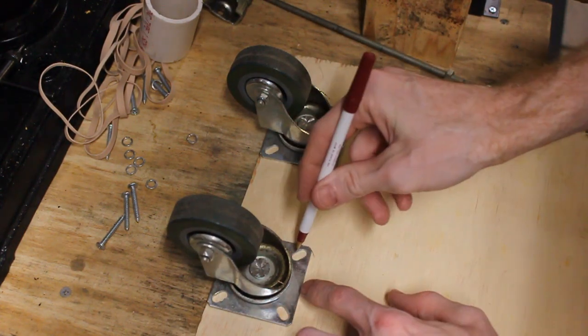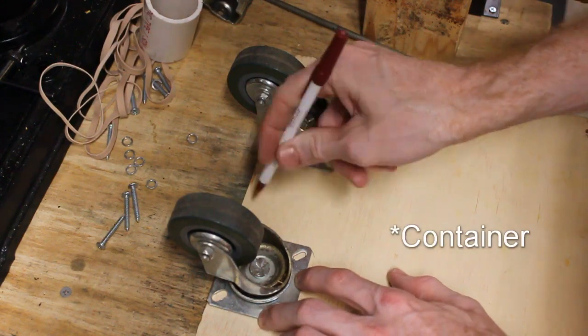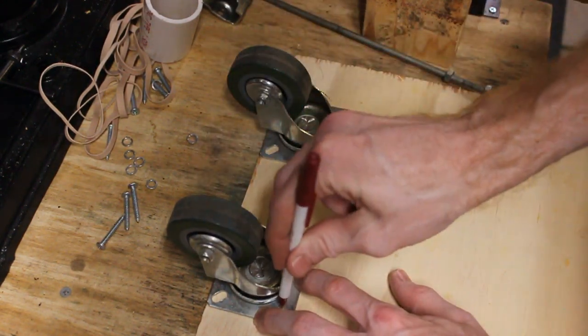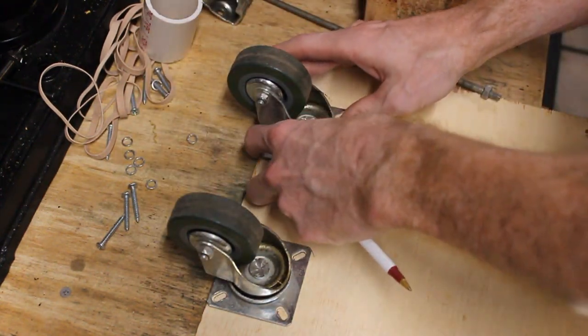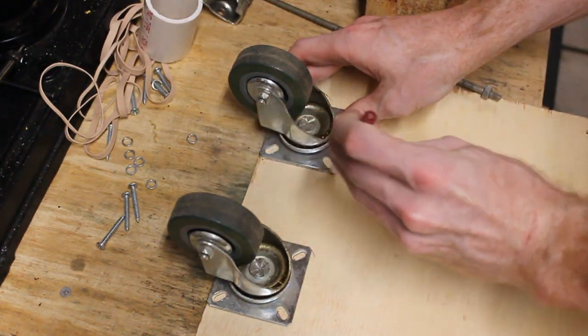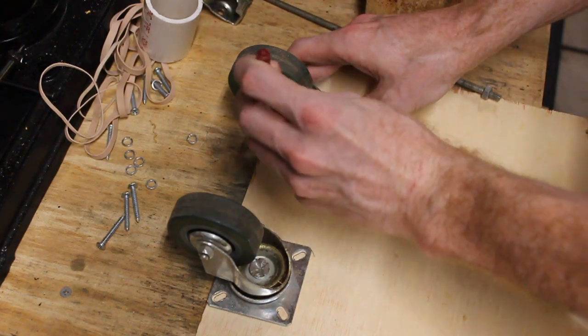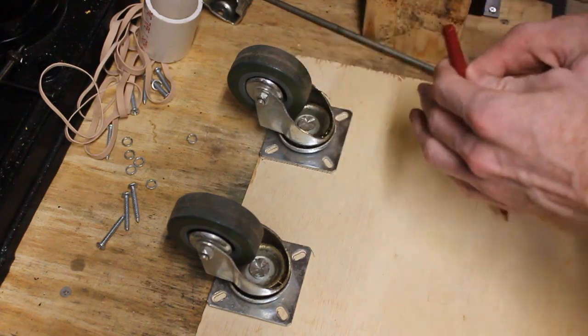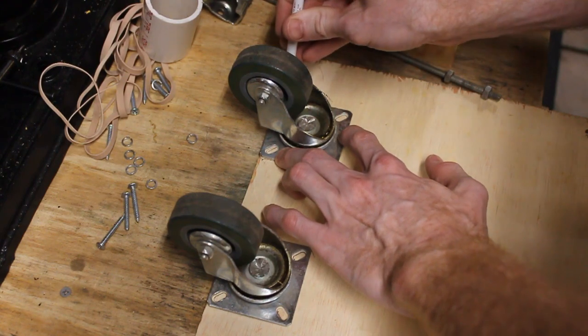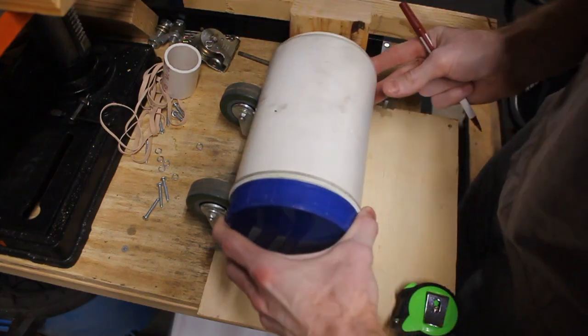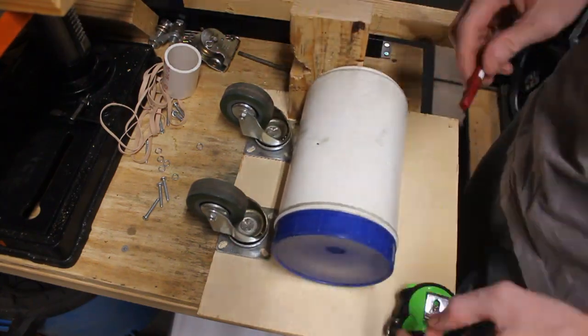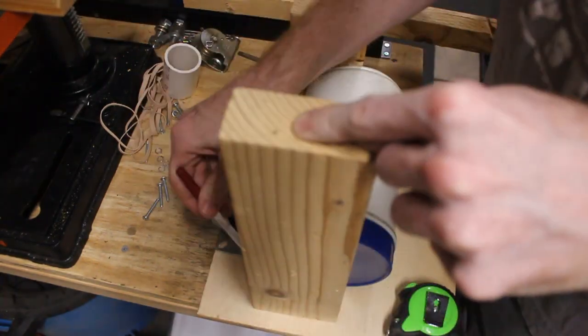So the first step is measure out your tumbling media and make sure that your casters are contacting the bucket or whatever you're tumbling in, contacting them about one or two inches in from the edges. So I did that and then I labeled where I'll be drilling my holes for these casters. I'm then going to mark out the guide pieces of wood on the side. This is what's going to keep your tumbling bucket centered.